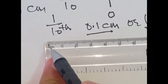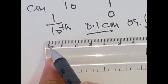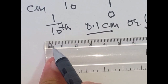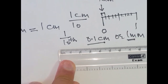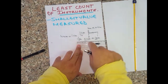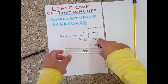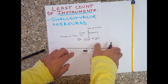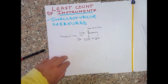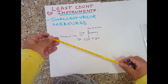The smallest value it can measure is from one graduation to the next — from here to here. The distance between two graduations is one millimeter or 0.1 centimeter, and this is called the least count. The smallest value that an instrument can measure is known as its least count. Now let us come to the thermometer, since we are doing the chapter on heat.